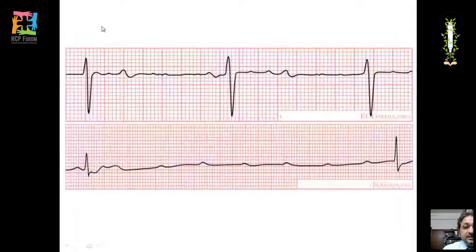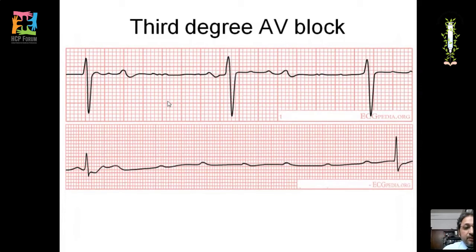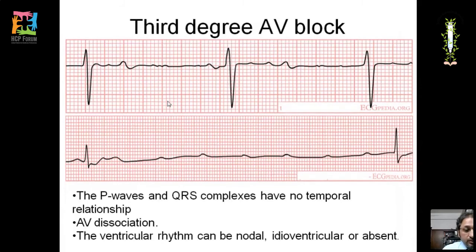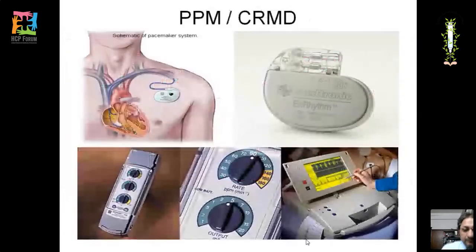The next ECG shows complete AV dissociation with no relationship between P waves and QRS complexes — this is third degree heart block. The ventricular rhythm may be nodal, idioventricular, or absent, and this will require a temporary pacemaker.